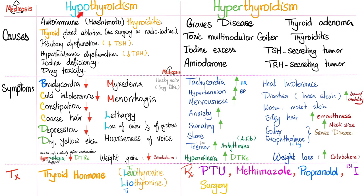Iodine deficiency can lead to hypothyroidism. Remember that thyroid hormone is the stove of the body — it drives metabolism. Without it, everything slows down: bradycardia, the heart is slow; the gut is slow, causing constipation; myxedema; cold intolerance; coarse hair; depression; dry yellow skin; hoarseness of voice; weight gain; and decreased reflexes.